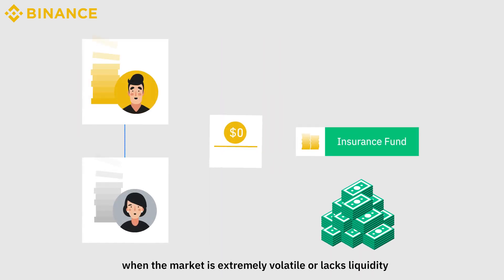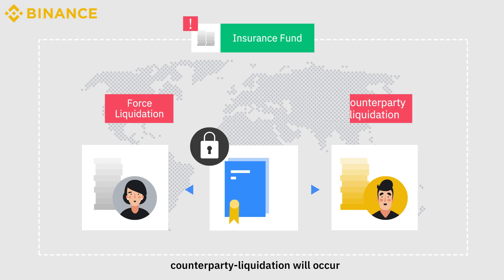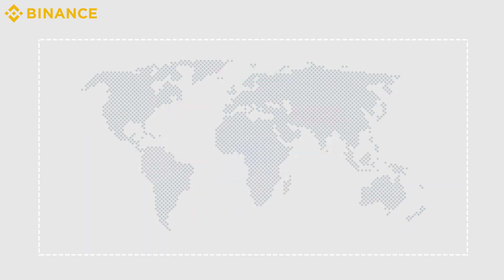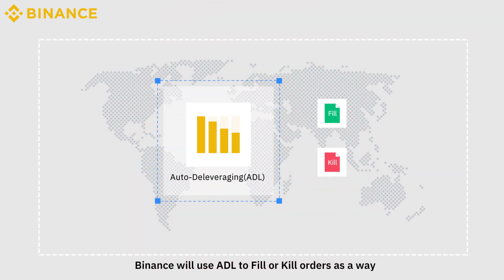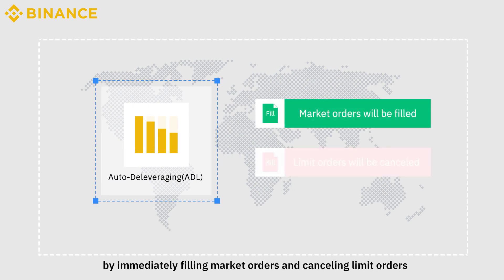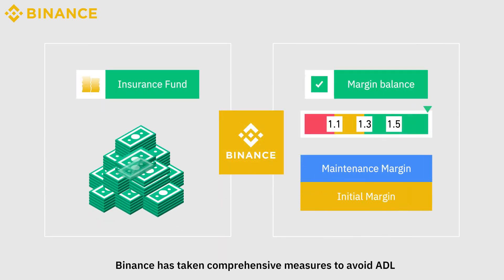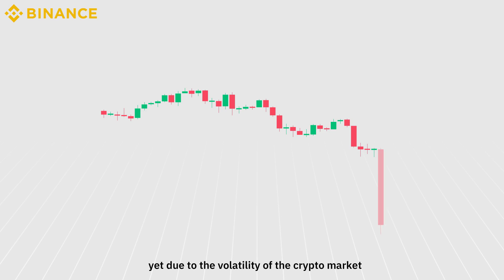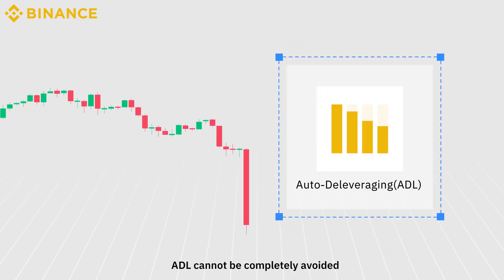However, when the market is extremely volatile or lacks liquidity, and the Insurance Fund is unable to accept positions from the liquidations, counterparty liquidation will occur. Under these circumstances, Binance will use ADL to fill or kill orders as a way to minimize the impact of counterparty liquidation. This process is completed by immediately filling market orders and cancelling limit orders. Binance has taken comprehensive measures to avoid ADL, yet due to the volatility of the crypto market and the high leverage of futures contracts, ADL cannot be completely avoided.